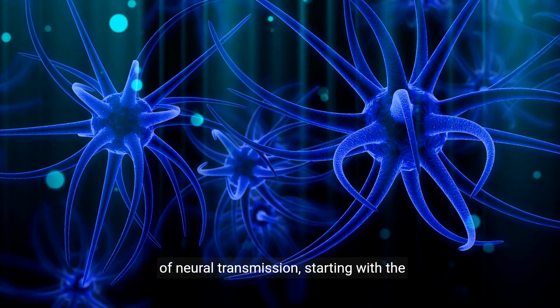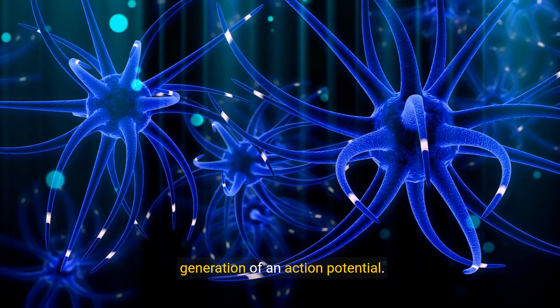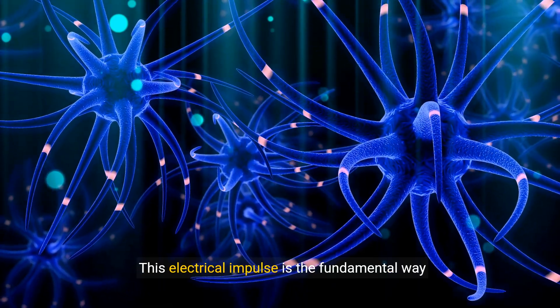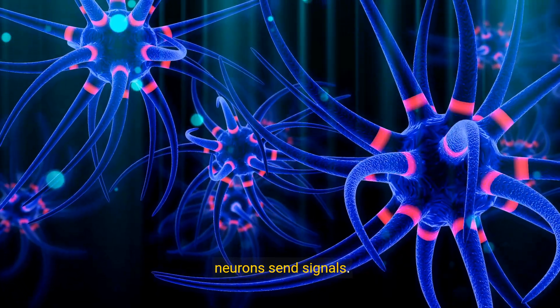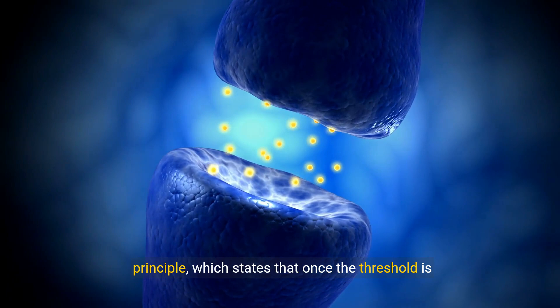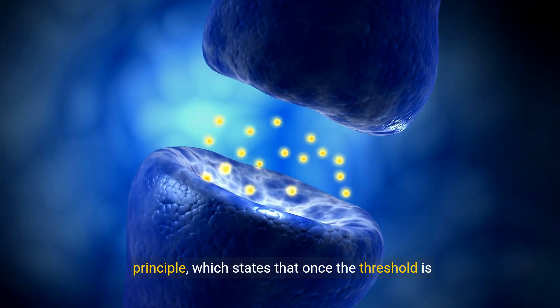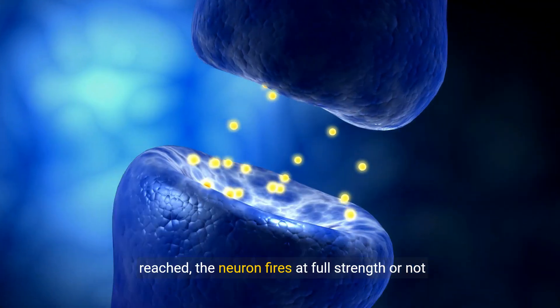Let's start by breaking down the intricate process of neural transmission, starting with the generation of an action potential. This electrical impulse is the fundamental way neurons send signals.